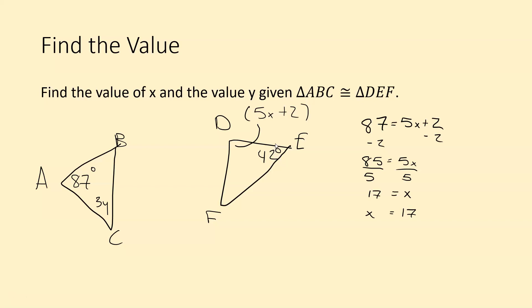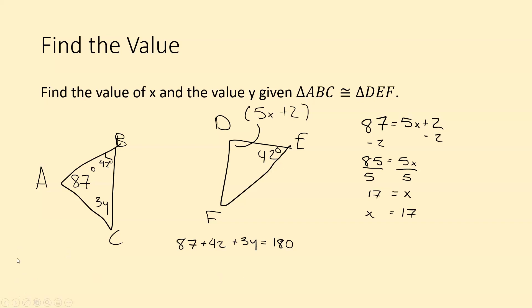For y, we use the fact that angle E is 42 degrees. Looking back at the congruent statement, angle E corresponds to angle B, so angle B is also 42 degrees. Now we have all three angles of triangle ABC: 87, 42, and 3y. Since the angles of a triangle sum to 180, we write: 87 + 42 + 3y = 180. Solving this equation gives y = 17 as well. Make sure you work through this problem and get the same results.